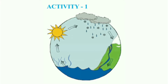Look at the picture and write the names of as many objects as you can. We can see the sun, the earth, clouds, rainfall, a water body, and a few arrows. What is happening to the water in the picture? This is a water cycle.